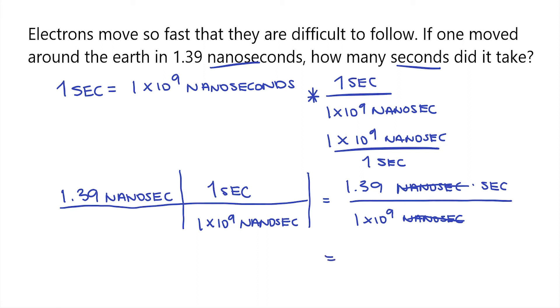So now 1.39 divided by 1 times 10 to the 9th. This is going to be equal to 1.39 times 10 to the negative 9. And the units will be seconds because that's what we're left with.